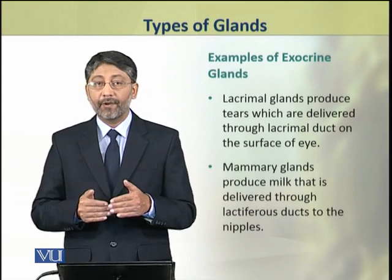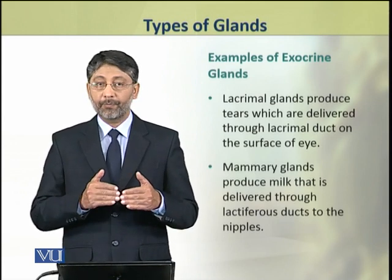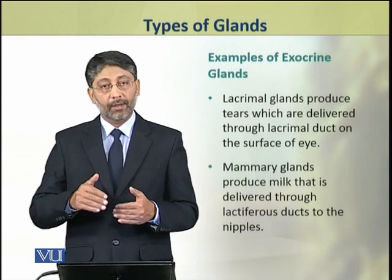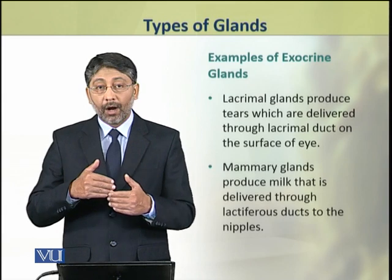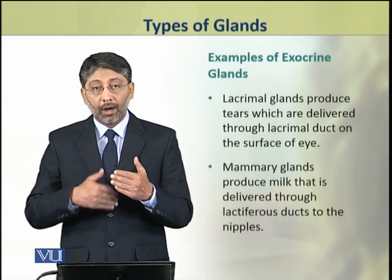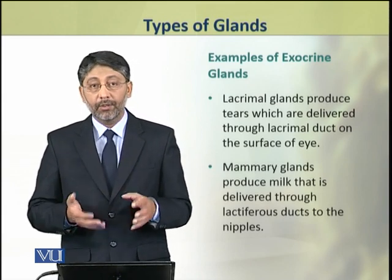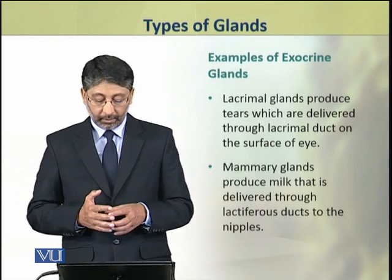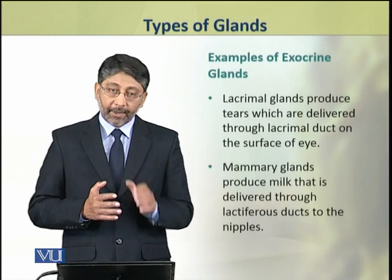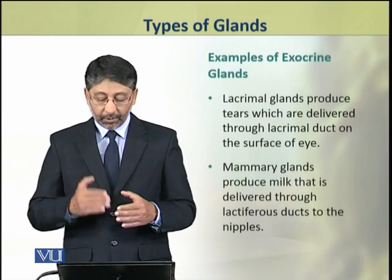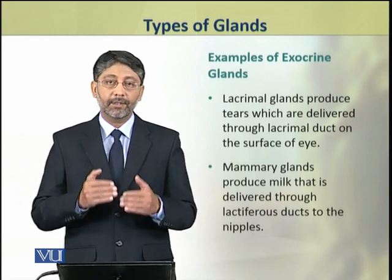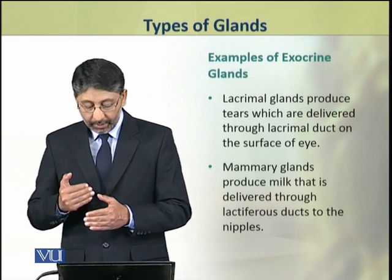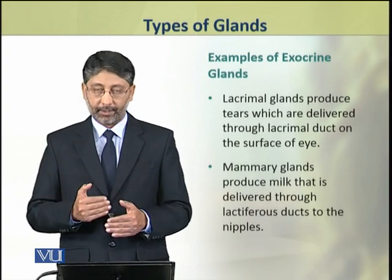Eyes have lacrimal glands which produce tears, and these tears are exported out of the body through lacrimal ducts. Mammary glands are also exocrine glands which produce milk, and this milk comes out through the lactiferous ducts.